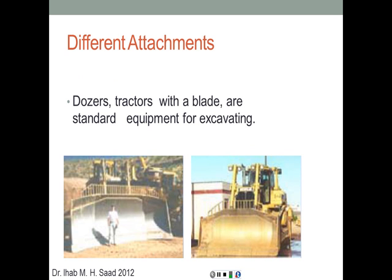Now we'll discuss the different types of blade attachments. Here, for example, we can see a full-grown person about six feet tall standing in front of a blade. As you can see, that blade is almost about 20 feet wide and about seven feet tall, which is quite normal especially in mines and quarries pushing heavy loads in front of it.